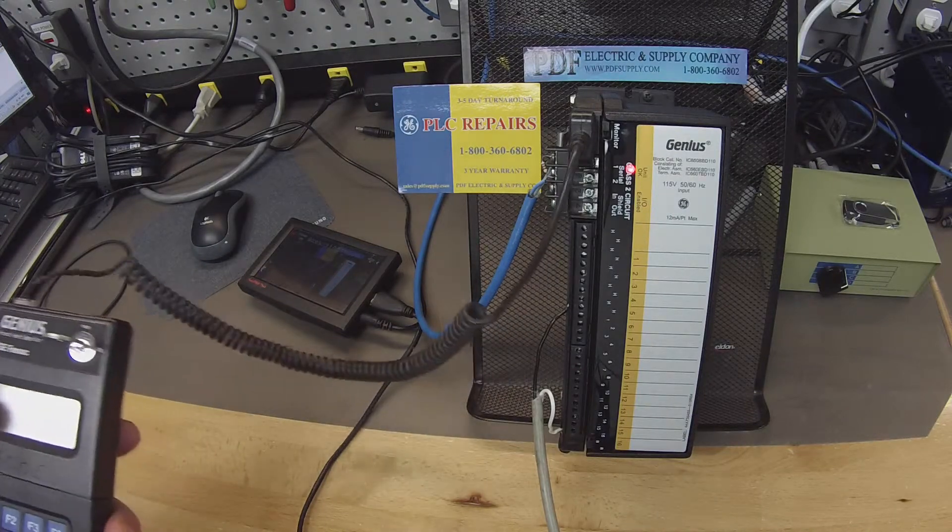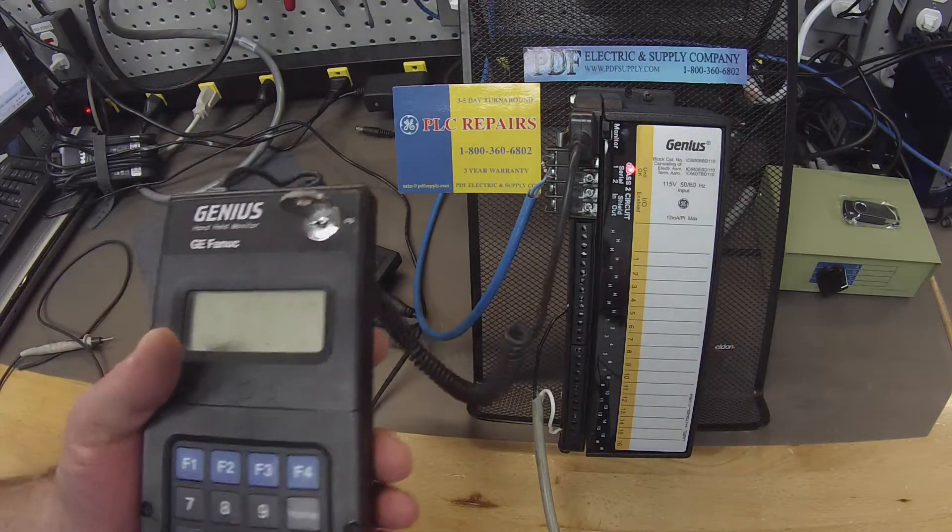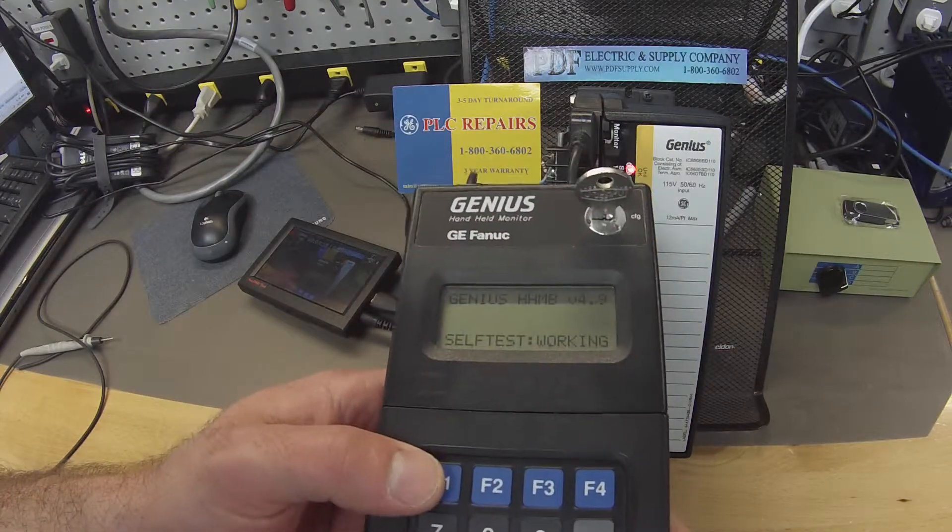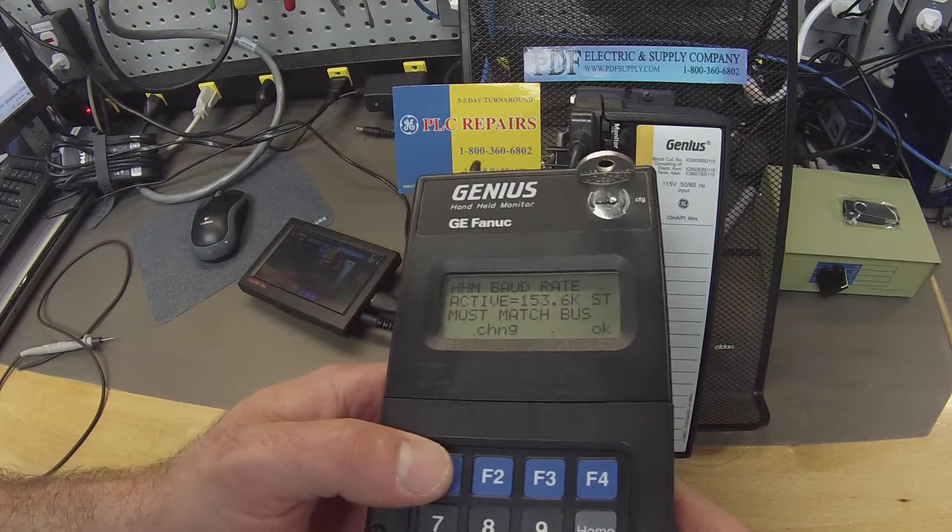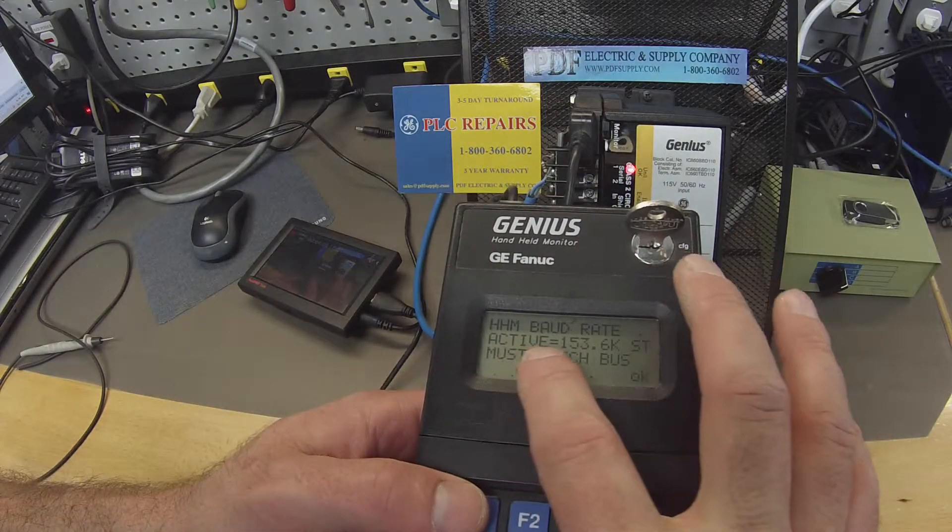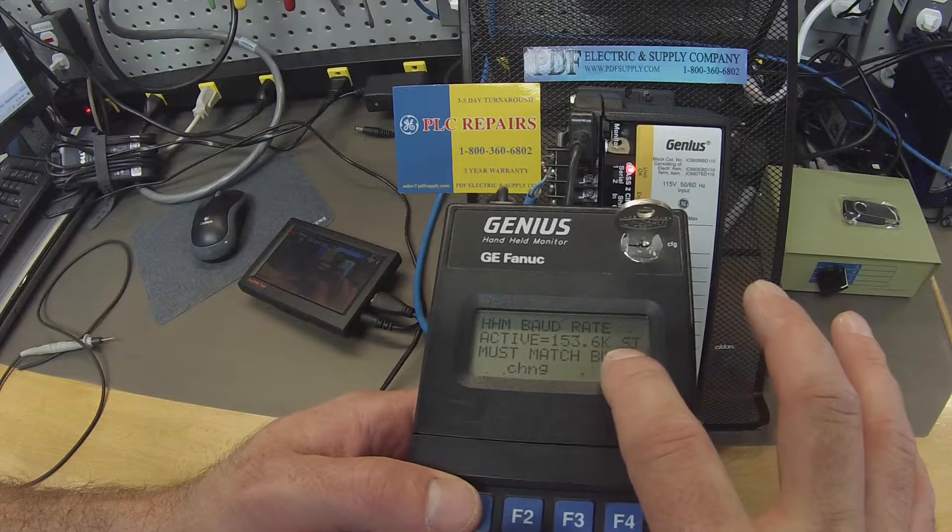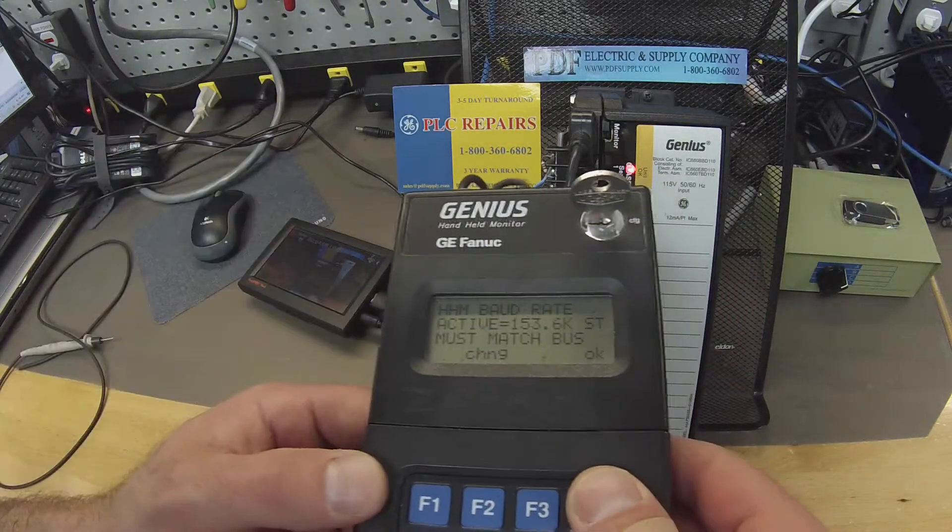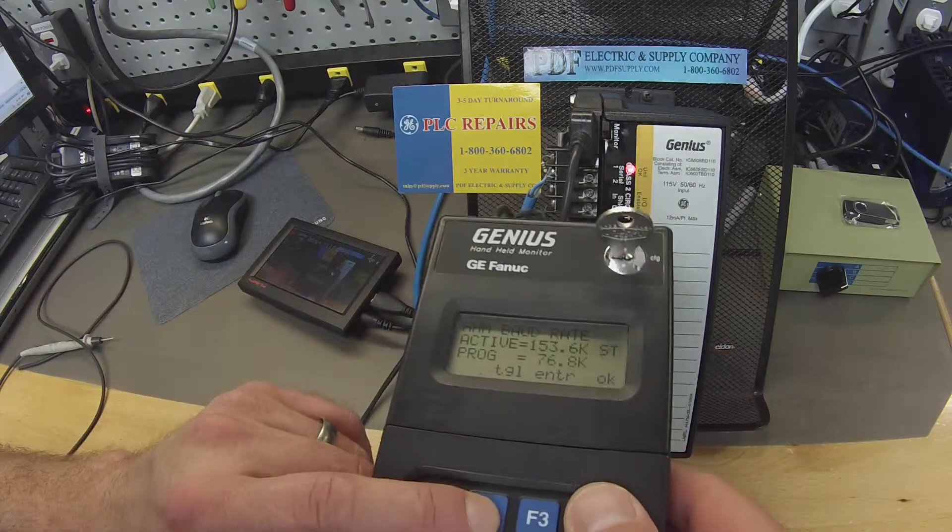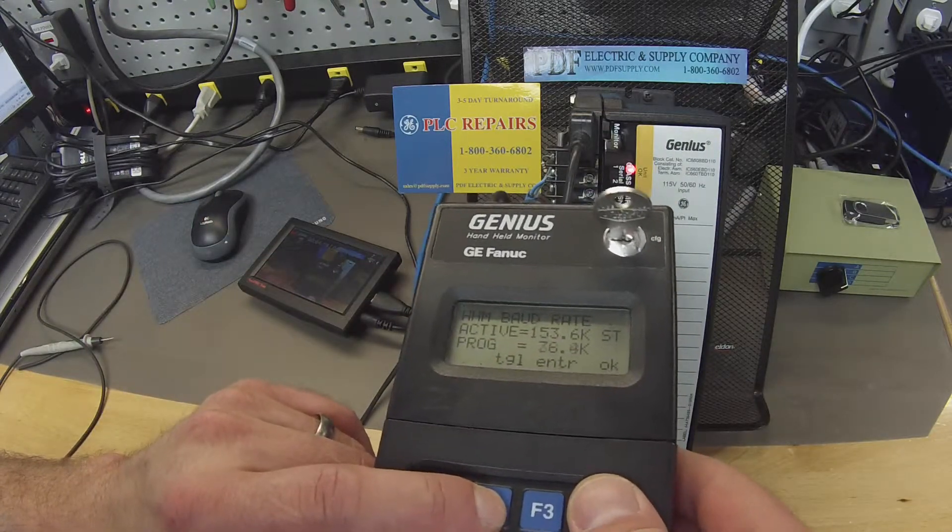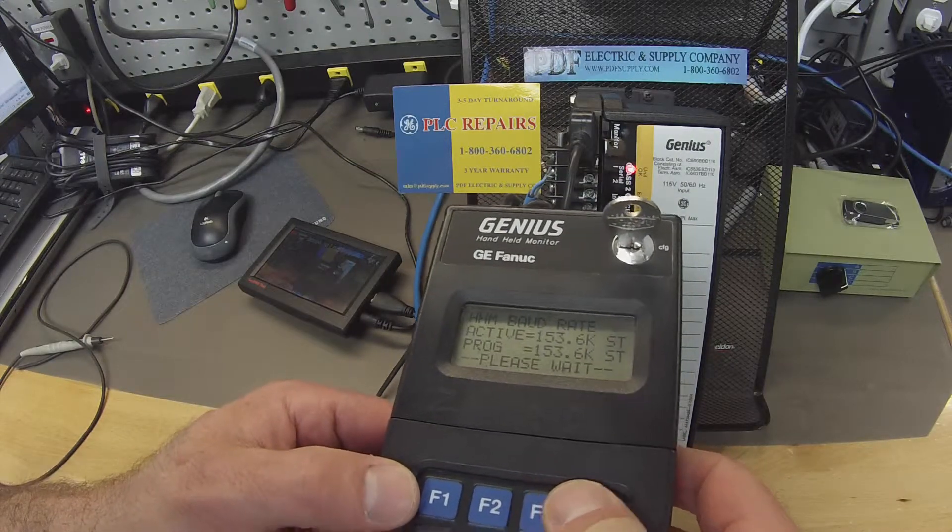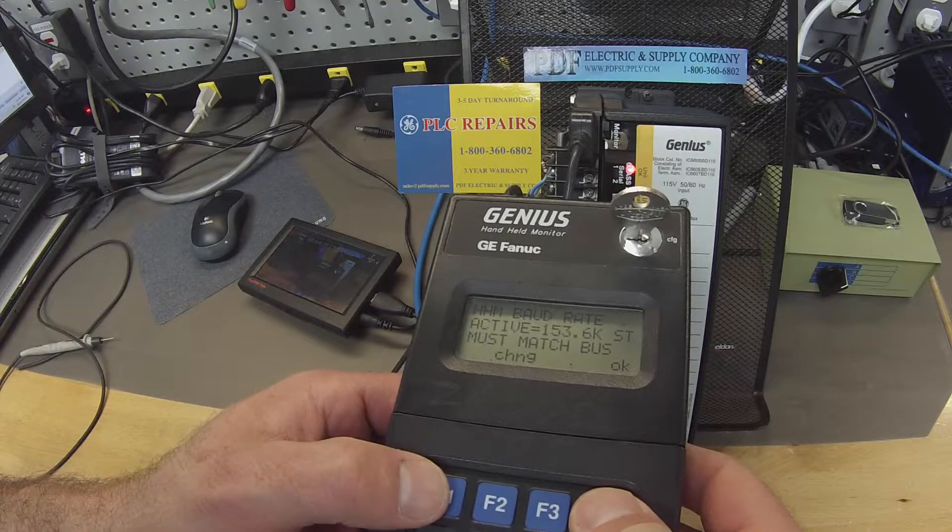Next thing I'm going to do, getting back to the handheld monitor, just so that we're all on the same page, I'm going to turn this on. The default baud rate is 153.6k standard. If you guys are using a different rate, make sure that you change that in here. You can toggle through all the different speeds. Like I said before, we're using the standard rate, 153.6k. I'm going to select OK.